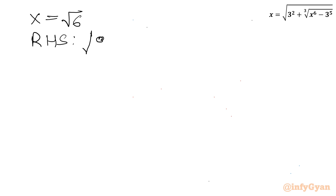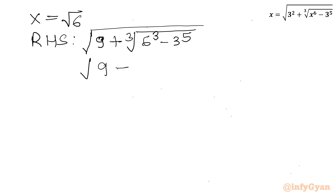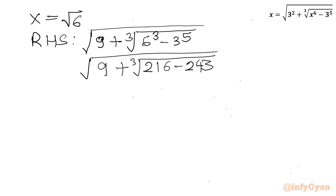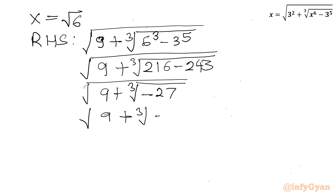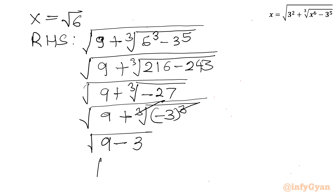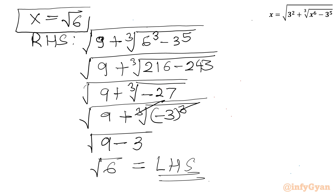Now checking x = √6. RHS: √(9 + ∛((√6)⁶ − 3⁵)) = √(9 + ∛(6³ − 243)) = √(9 + ∛(216 − 243)) = √(9 + ∛(−27)) = √(9 + ∛(−3³)) = √(9 − 3) = √6. This matches the LHS, so x = √6 is also verified and confirmed as a solution.